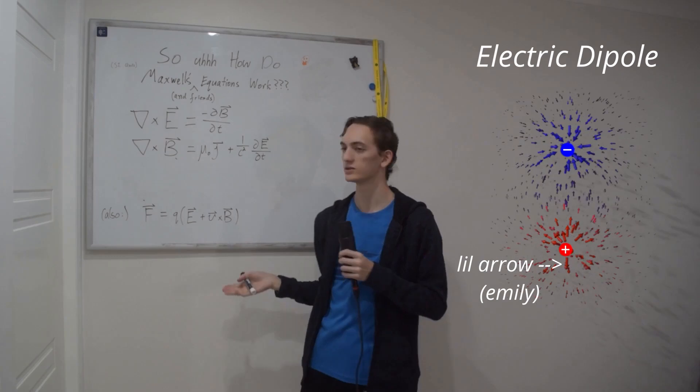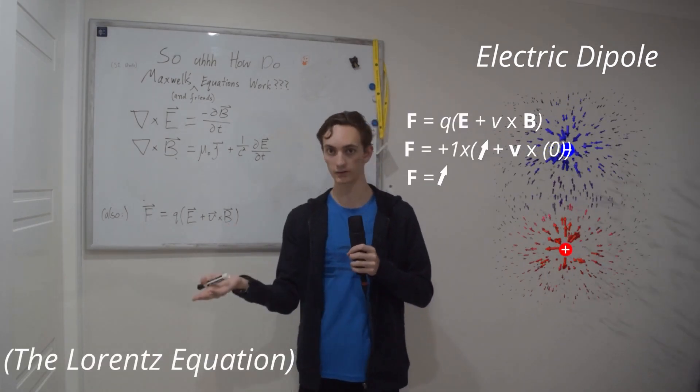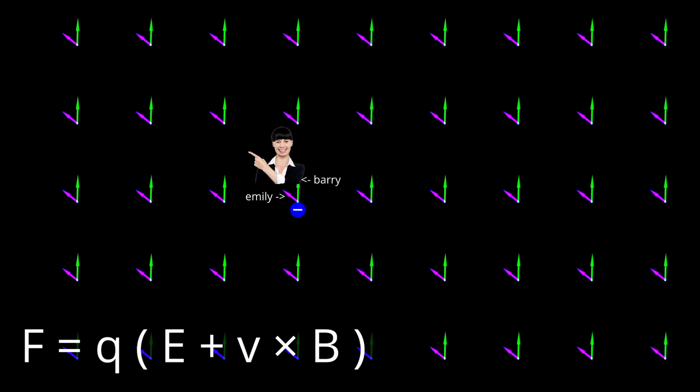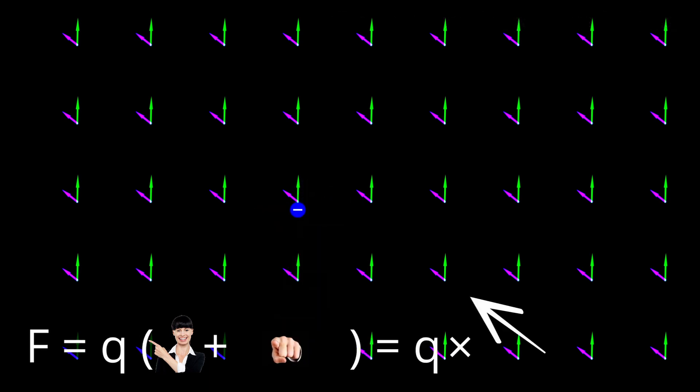These represent spaces of little arrows which we use along with this equation to find forces on charged particles. So Emily might tell you to go this way and Barry will first point in the direction of your velocity, then curl his fingers towards his own arrow and then tell you to move in the direction of his thumb. Then since you're negatively charged, you'll go in the exact opposite direction.